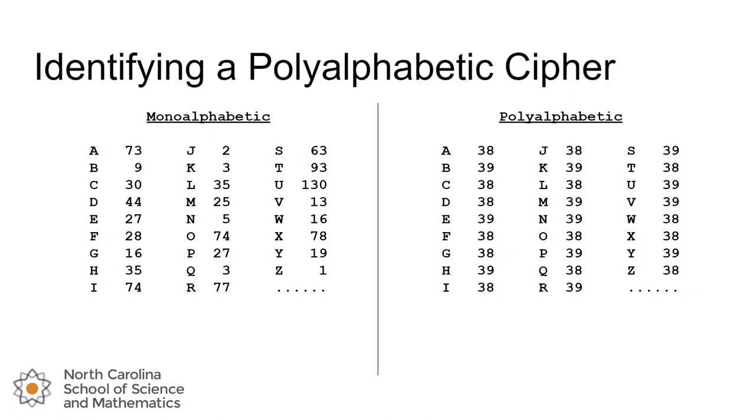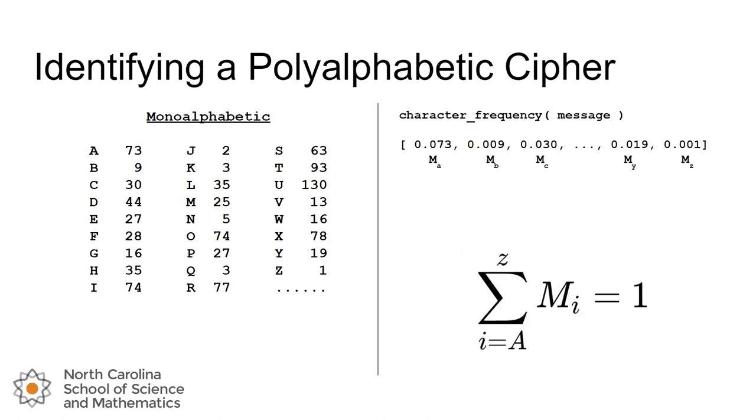To get us started, we've generated two distributions, two fictitious ones. Each of these distributions has 1,000 characters represented in the counts. On our monoalphabetic we have 73 A's, 9 B's, 30 C's, and so on. Our polyalphabetic cipher is really good because the distributions are almost perfectly flat—just a couple of characters have 39 where the rest have 38. We're going to calculate the frequency of each single character in the ciphertext. We can think about running our character frequency function on the message we've intercepted. We would get frequencies like 0.073, 0.009, and so on. We're going to use the notation where M sub A means the probability that you reach into that ciphertext, pick out a single letter and it's an A. M sub B means the probability you pick one letter and it's a B, and so on.